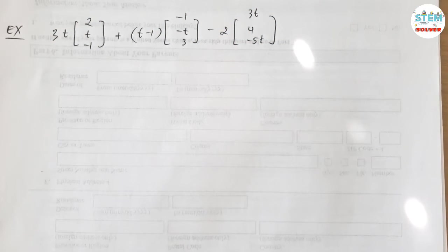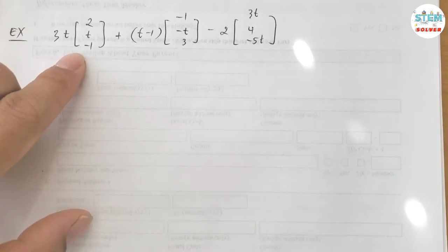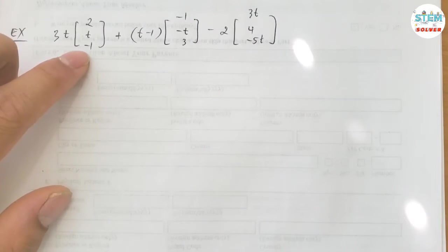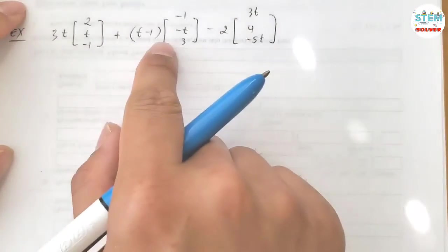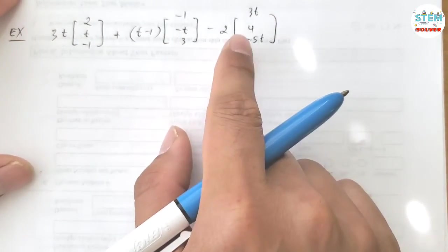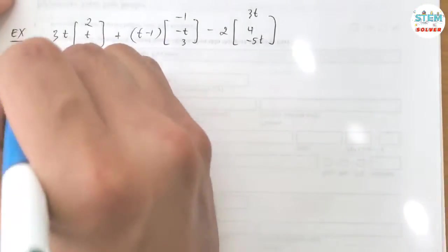Write the given sum as a single column matrix. You are given 3 matrices, and these are matrices multiplied by a scalar or function. This is multiplied by a function and this is multiplied by a scalar, so we are going to do this step by step.